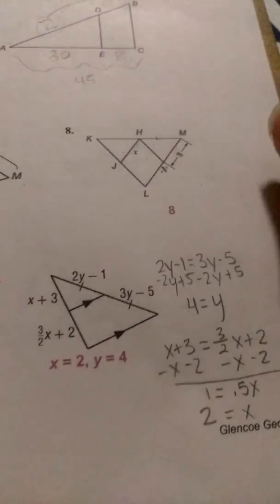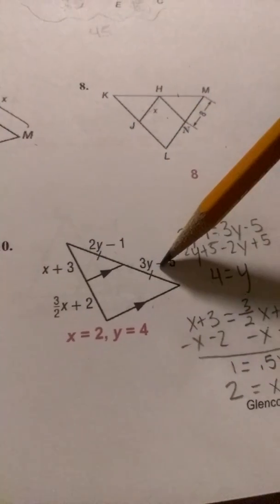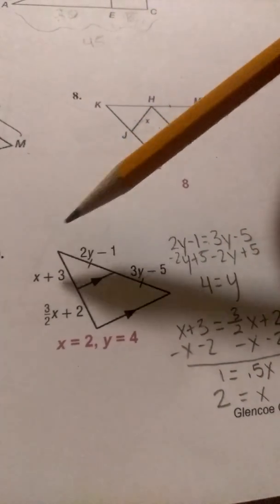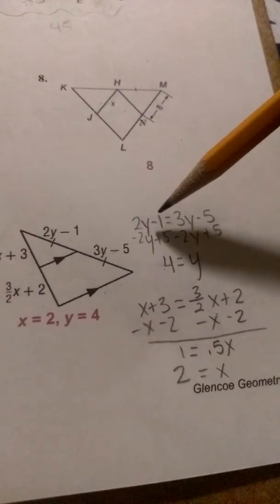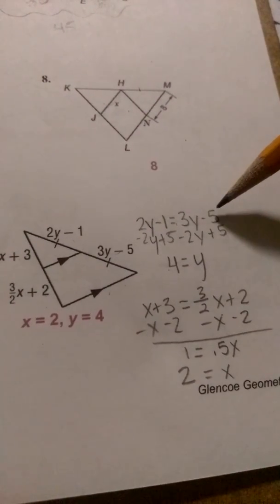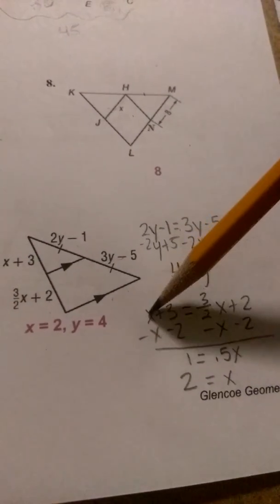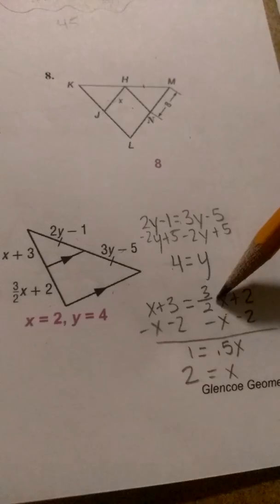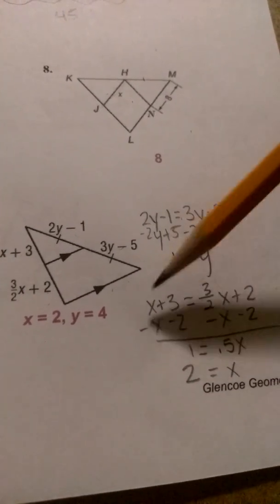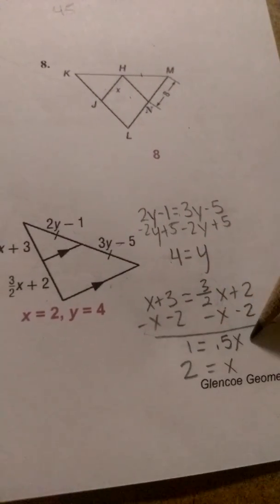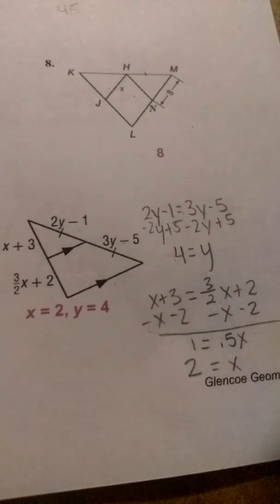And then last, number 10. Again, because those two are parallel, we can compare these two sides and set them equal to each other. We can do the same thing with these two. So 2Y minus 1 is equal to 3Y minus 5. Solve for Y. Y should equal 4. And then X plus 3 equals 3 halves X plus 2. If you want to put this into a decimal format, it's 1.5. That's how I got the 0.5 here. And then when you divide that on both sides, you get X is equal to 2.